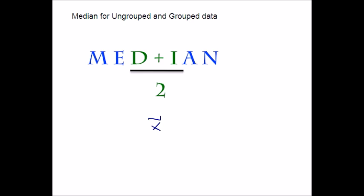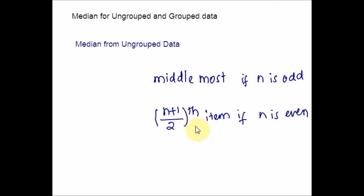I am going to start with ungrouped data. Ungrouped data means raw data — you get a set of numbers. You have to arrange them in either ascending or descending order and count the numbers. If the total number of data is odd, you can just point out the middlemost value — that would be your median. If n is even, you can use the formula (n + 1) / 2 term. Here is the formula: find the middlemost if n is odd, or apply (n + 1) / 2 if n is even.